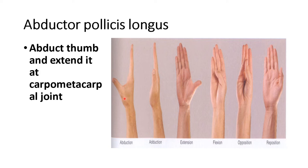The action of abductor pollicis longus is that it abducts the thumb — this is the normal resting position of the thumb. As the name indicates, it abducts the thumb and extends it at the carpometacarpal joint. These are the carpal bones and this is the metacarpal, so it extends at the carpometacarpal joint and abducts the thumb.